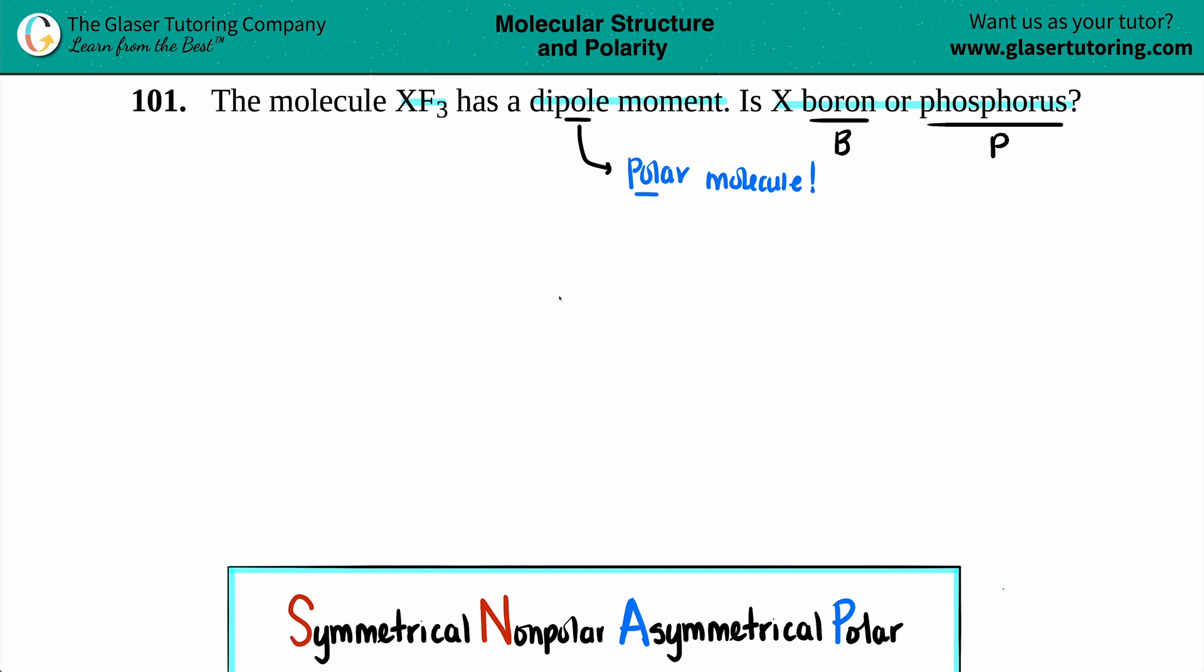So normally, with these types of questions, they won't blatantly say, hey, draw the Lewis structure. That would be too easy. But in order to answer this question, the easiest way is to just draw it out, see what it looks like, and then we can come to a conclusion.